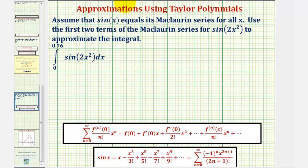In this example, instead of using this formula for the Maclaurin series, we'll assume that we know the power series for sine x centered at zero is this power series here. That way, to find the Maclaurin series for sine two x squared, we can substitute two x squared for x in the power series.